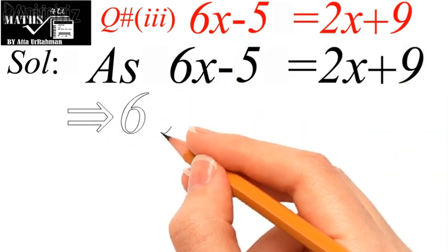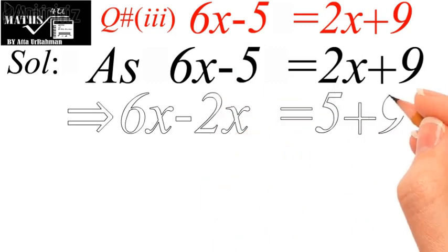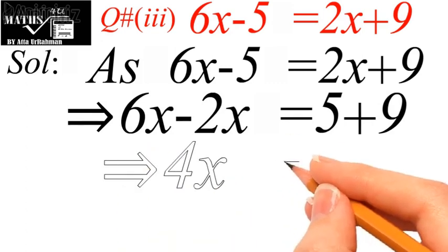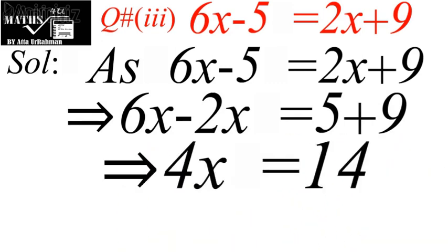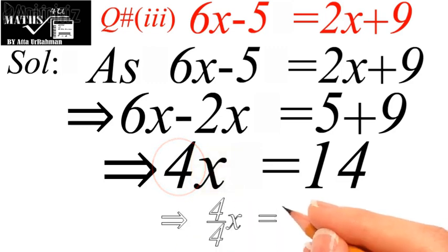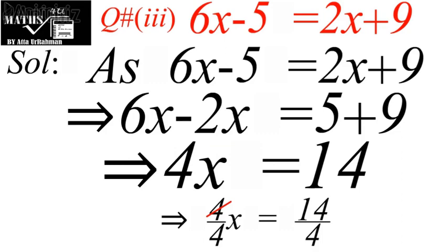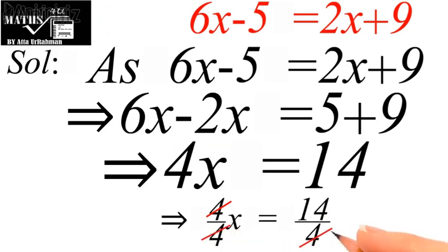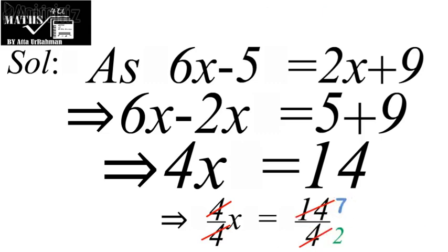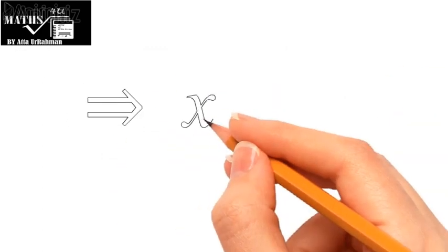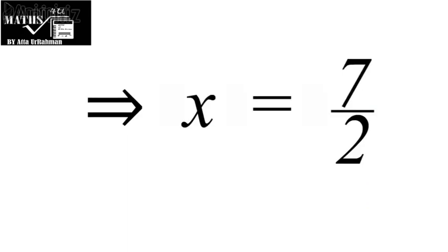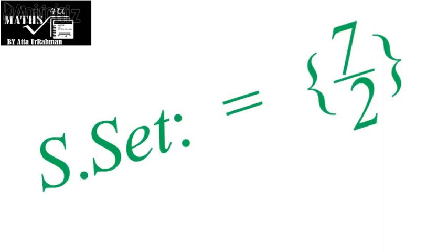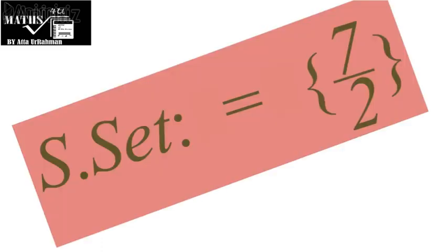We transfer 2x from the right to the left toward 6x, and 5 from the left to the right hand side toward 9. So 6x minus 2x gives 4x, while on the right 5 plus 9 gives 14. Now we want to find the value of x, so we divide both sides by 4. On the left 4 cancels with 4, and on the right 14 divided by 4 gives 7 upon 2. Thus the final value of x is 7 upon 2, and its solution set is given by {7/2}.